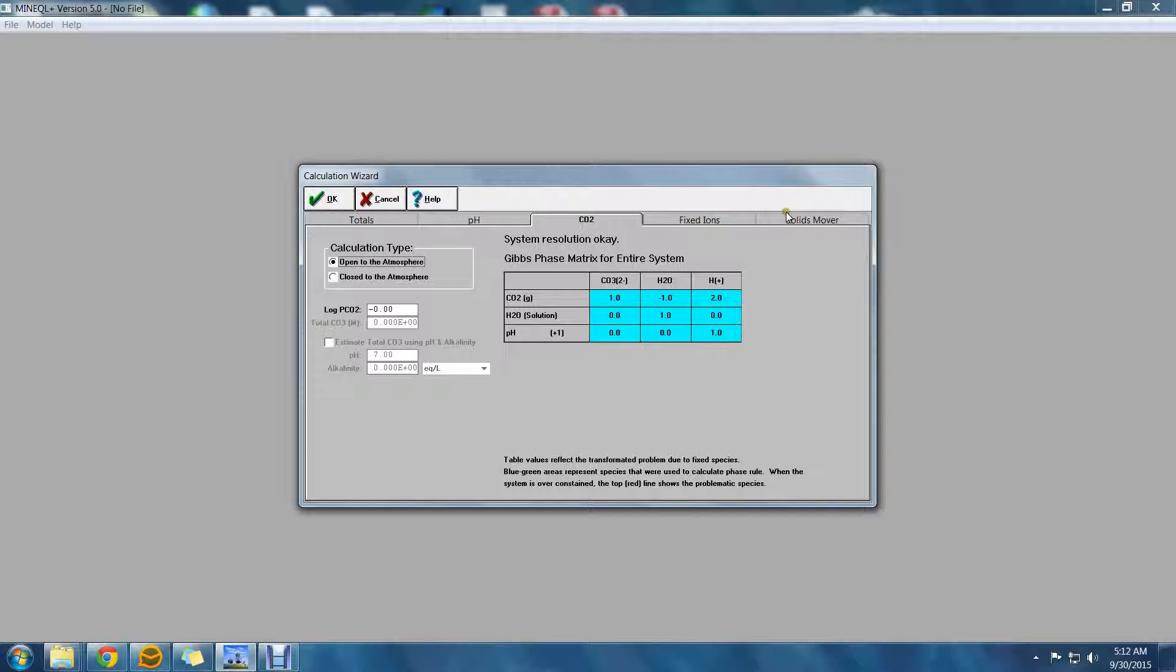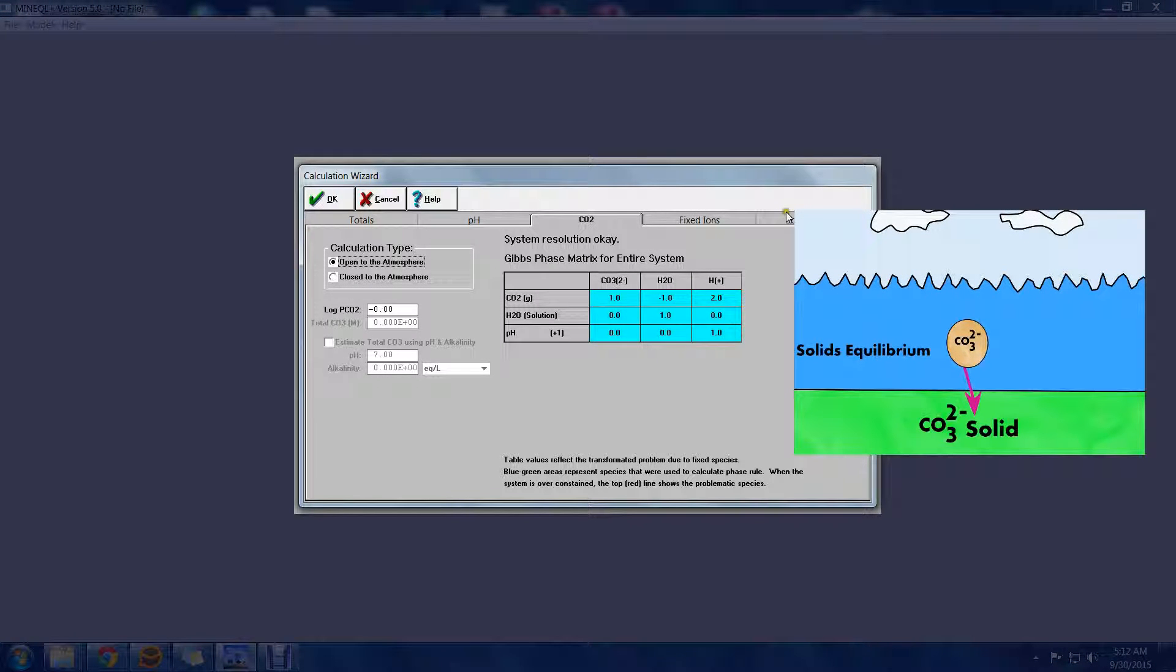The Calculation Wizard in Minicube Plus version 5 provides a great deal of flexibility in defining your chemical system. However, with that flexibility, there is also the possibility of creating systems that are over-constrained and unrealistic.